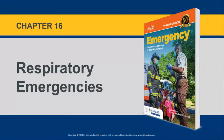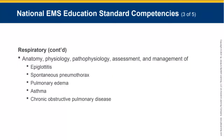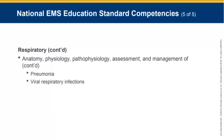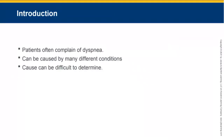This is chapter 16, Respiratory Emergencies. In the field we're going to see a lot of patients. Quite often we'll come across patients that complain of dyspnea. Dyspnea can be caused by many different conditions. Remember, dyspnea is difficulty breathing. The cause of dyspnea can be very difficult to determine, but even without a definitive diagnosis we can still save the patient's life. That's very important.